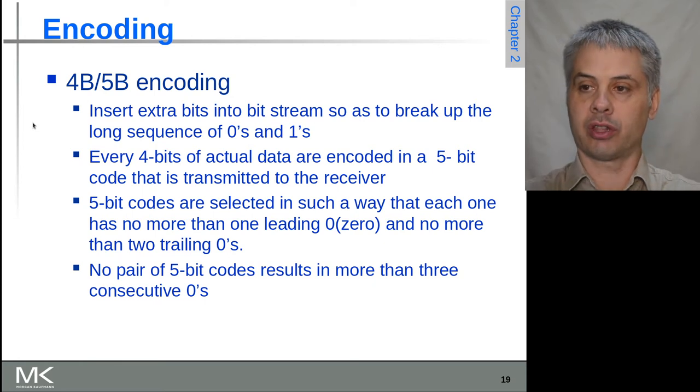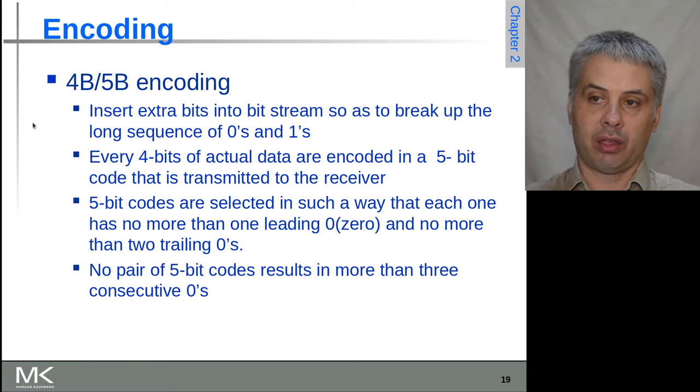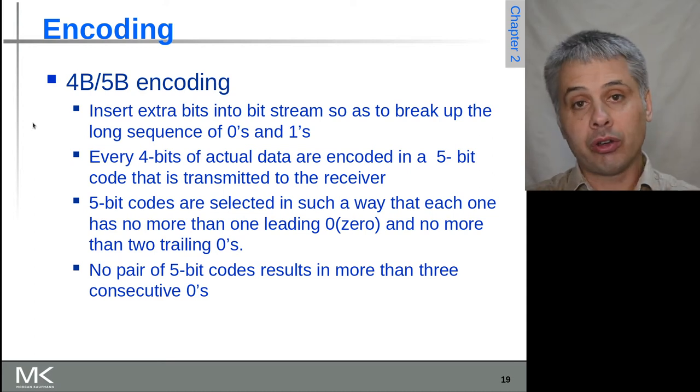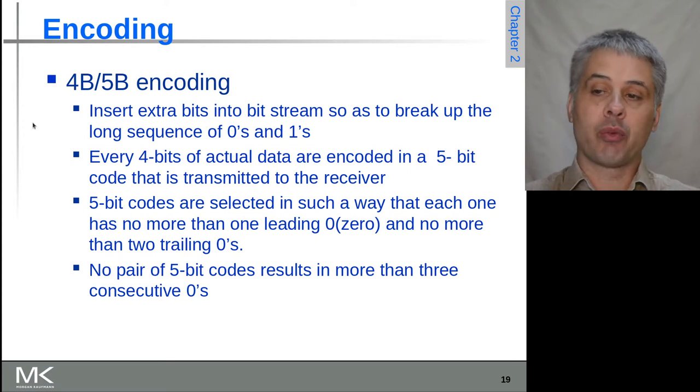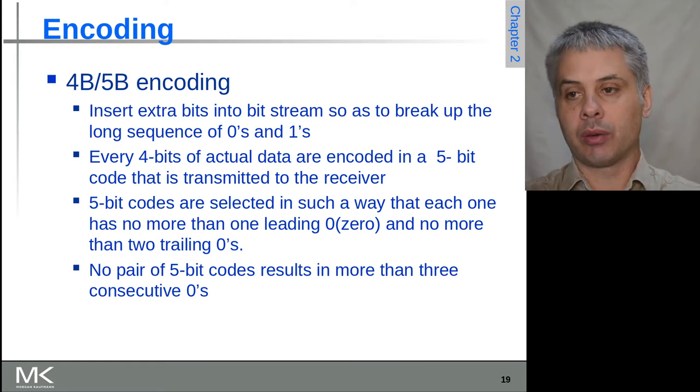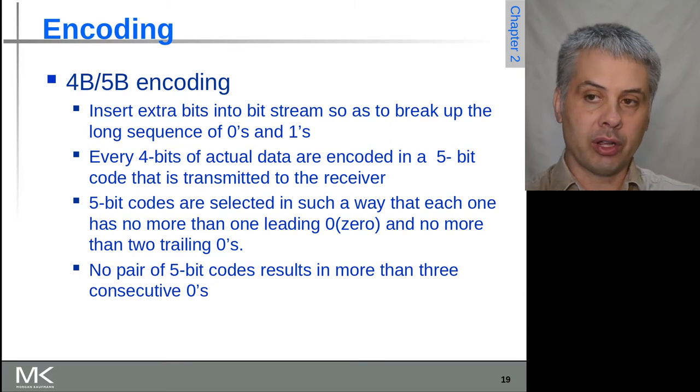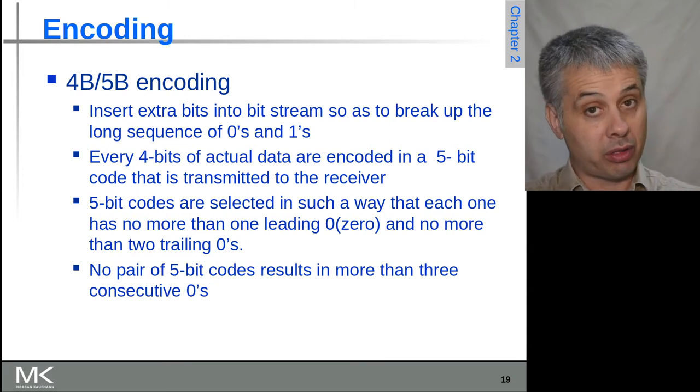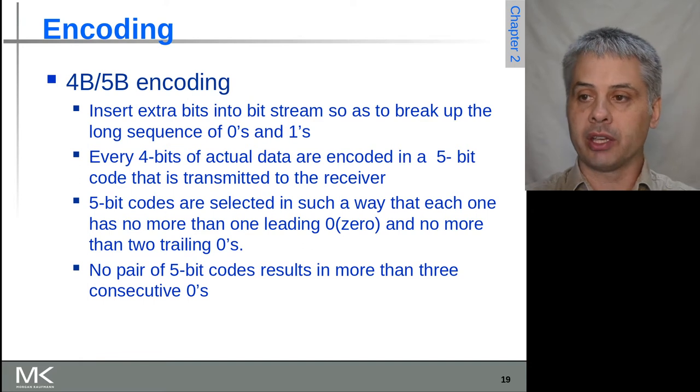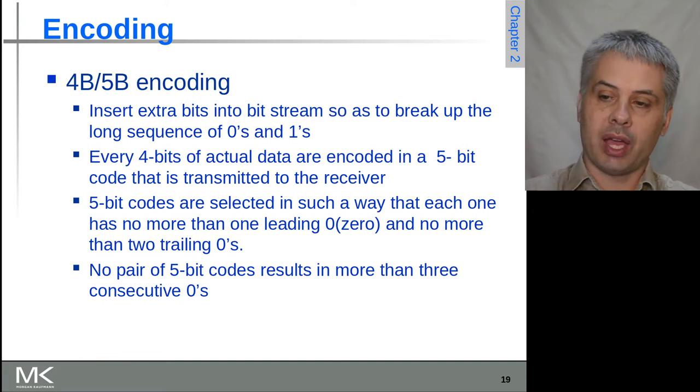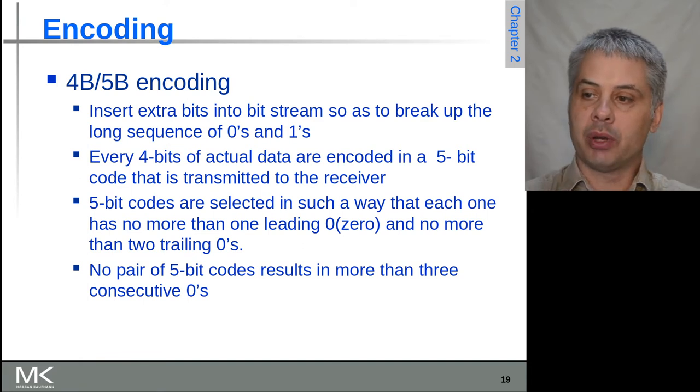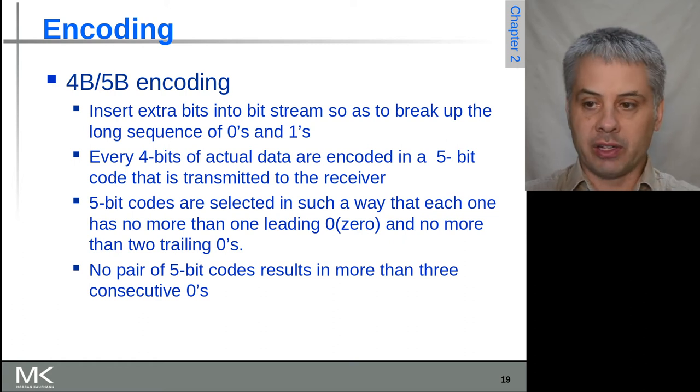So one approach to this is, for example, 4B/5B coding. This is every four bits gets encoded as five bits, and we add that extra bit in there we can actually use so that we can choose 16 different five-bit encodings. That will get us 2 to the power of 4, or 16, so we can encode all of the four-bit combinations. But we make sure that every one of those five-bit combinations fits some rules that prevent us from having these problems.